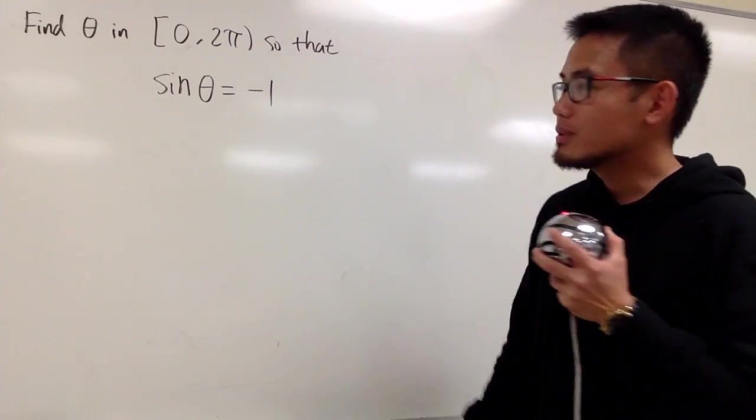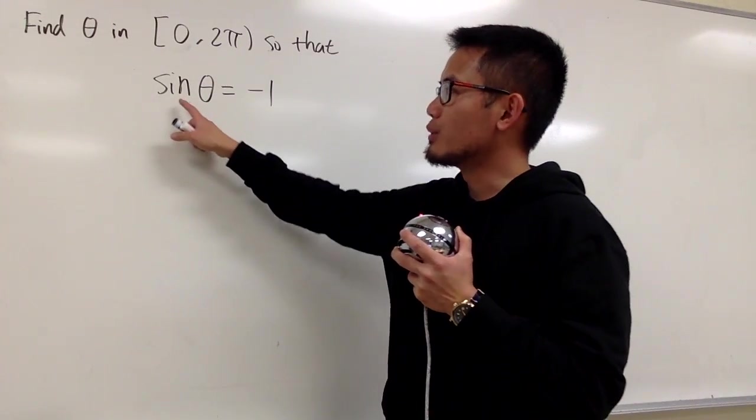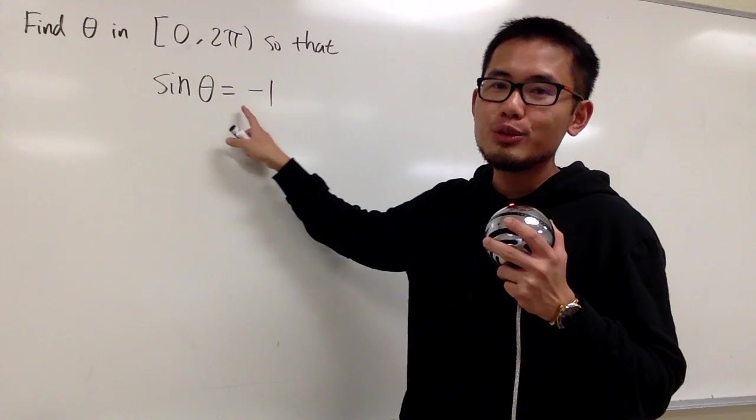All right, we're going to find out all the theta values in between 0 to 2π so that sine of theta is equal to negative 1.